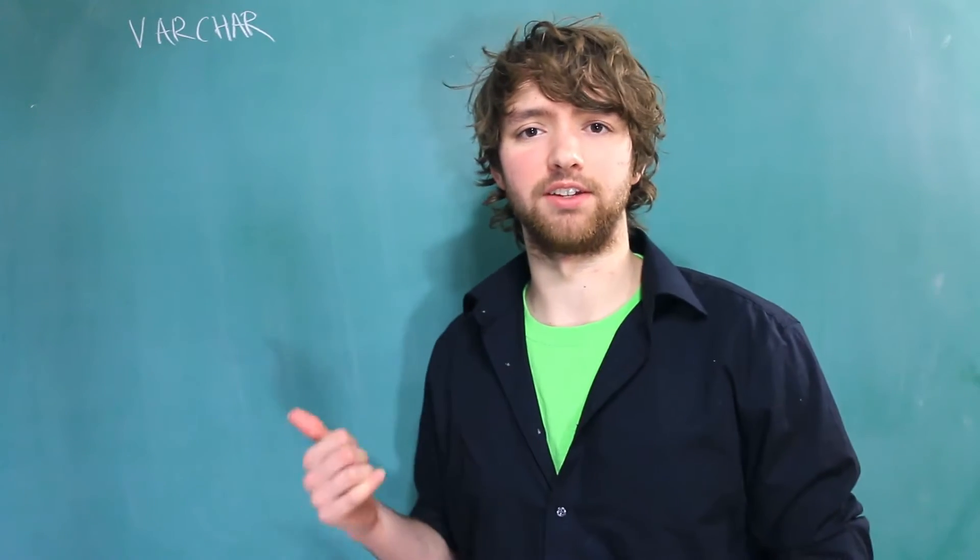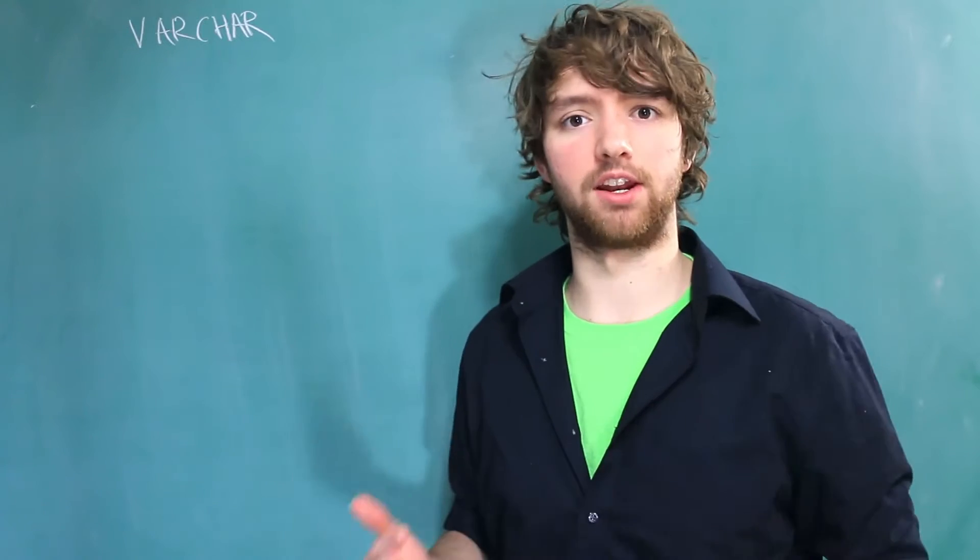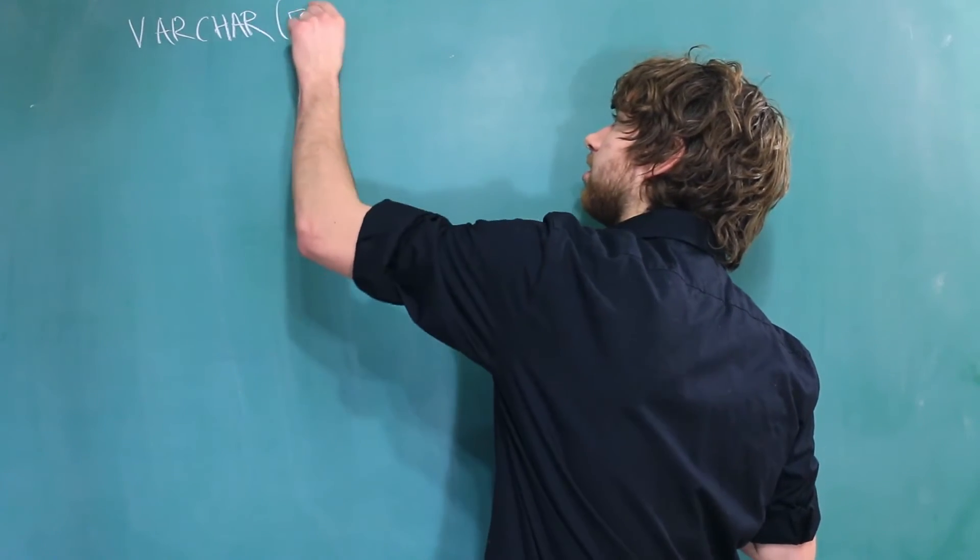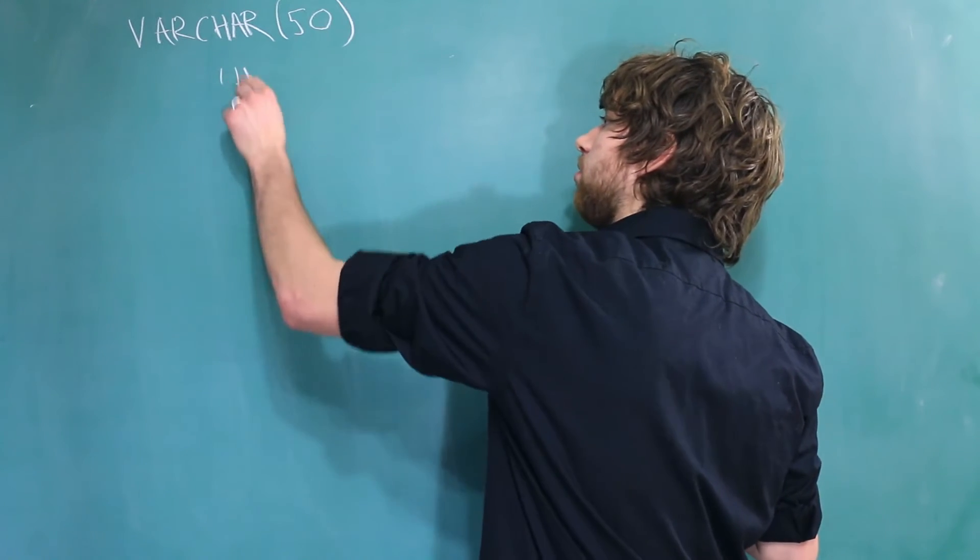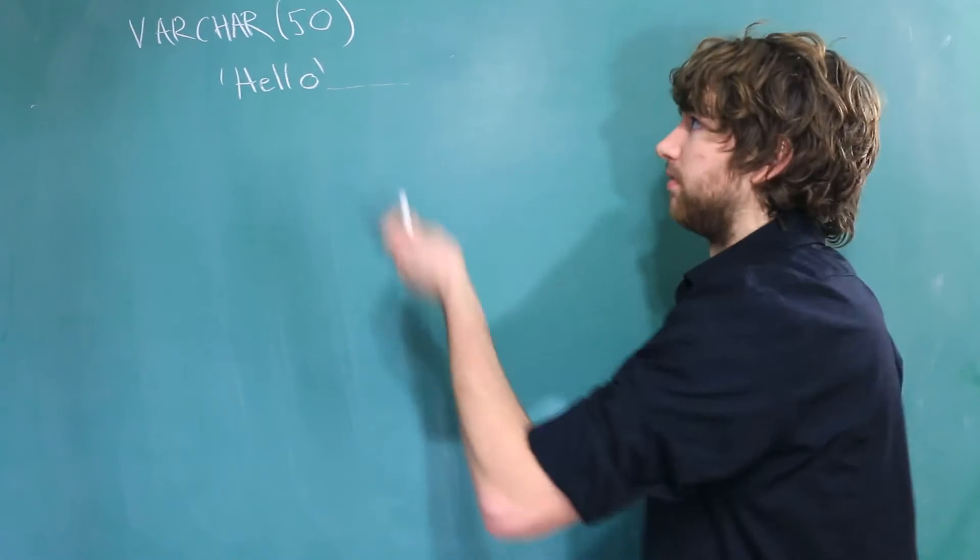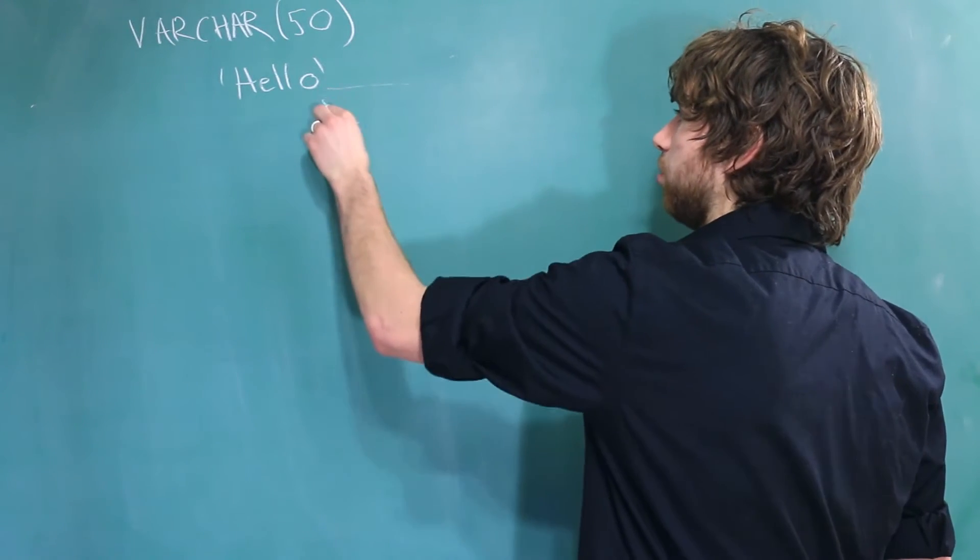Now the special thing about VARCHAR data types is that it doesn't pad our data. That means if we make a VARCHAR of 50 characters and we put in something like hello, in a CHAR data type it would pad it with 45 spaces, but VARCHAR is literally going to store only 5.